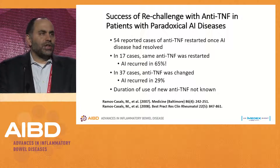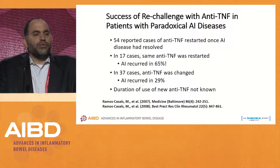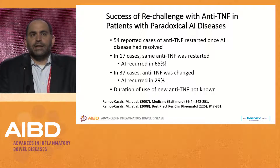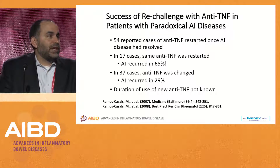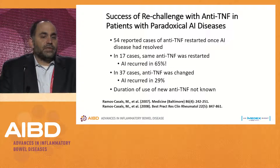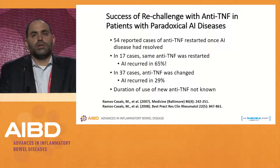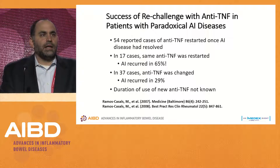Regarding re-challenge: in 54 reported cases where anti-TNF was restarted after a paradoxical autoimmune disease resolved, 17 went back to the same anti-TNF — which I'd say is a bad idea — and recurrence occurred in two thirds. In 37 cases where they changed the anti-TNF, recurrence occurred in one third. For drug-induced lupus, re-challenge in class feels more reassuring, whereas for psoriasis and demyelinating diseases, re-challenge in the same class is not recommended.